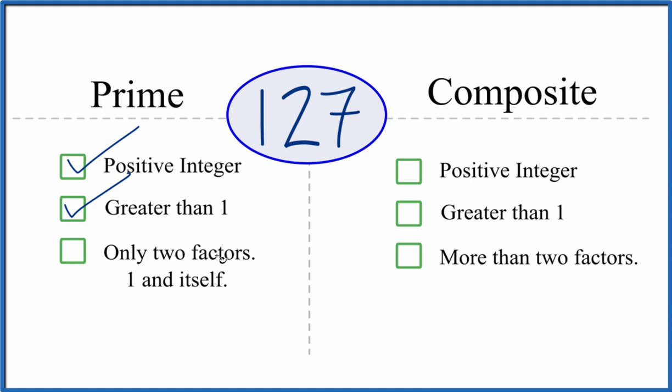And are there only two factors, one and itself, that divide evenly into 127? So we know 1 times 127 equals 127, so there's two factors. But are there any other numbers that we can divide evenly into 127?